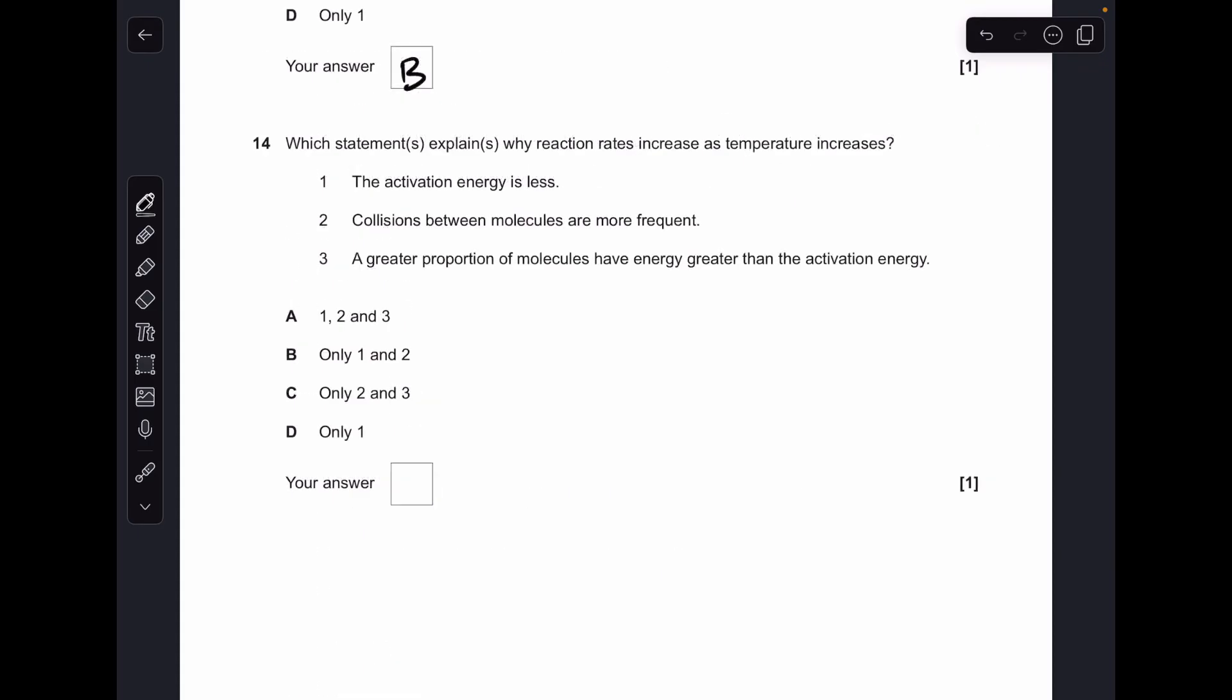Question 14, sort of similar style to 13. Which statement explains why rates increase as temperature increases? Number one, the activation energy is less. Well, that's a load of rubbish. Temperature doesn't affect activation energy. Catalysts do, but not temperature. The collisions are more frequent between the molecules. Yeah, that's right. That's more per second. Greater proportion of molecules have energy greater than the activation energy. Yeah, because you're giving the molecules more energy by increasing the temperature. Two and three correct, C is the answer.